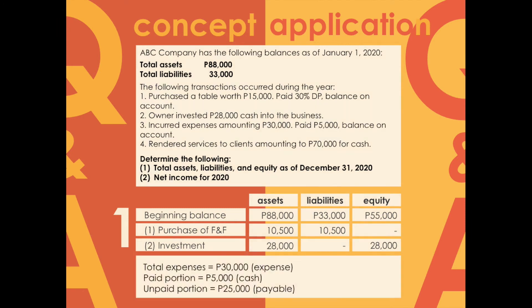Transaction three: incurred expenses amounting to 30,000 pesos — paid 5,000, balance on account. The impact is a 30,000 peso increase in expense, a 5,000 peso decrease in cash, and a 25,000 peso increase in payable. This results in a 30,000 decrease in equity, a 5,000 decrease in assets, and a 25,000 increase in liabilities.